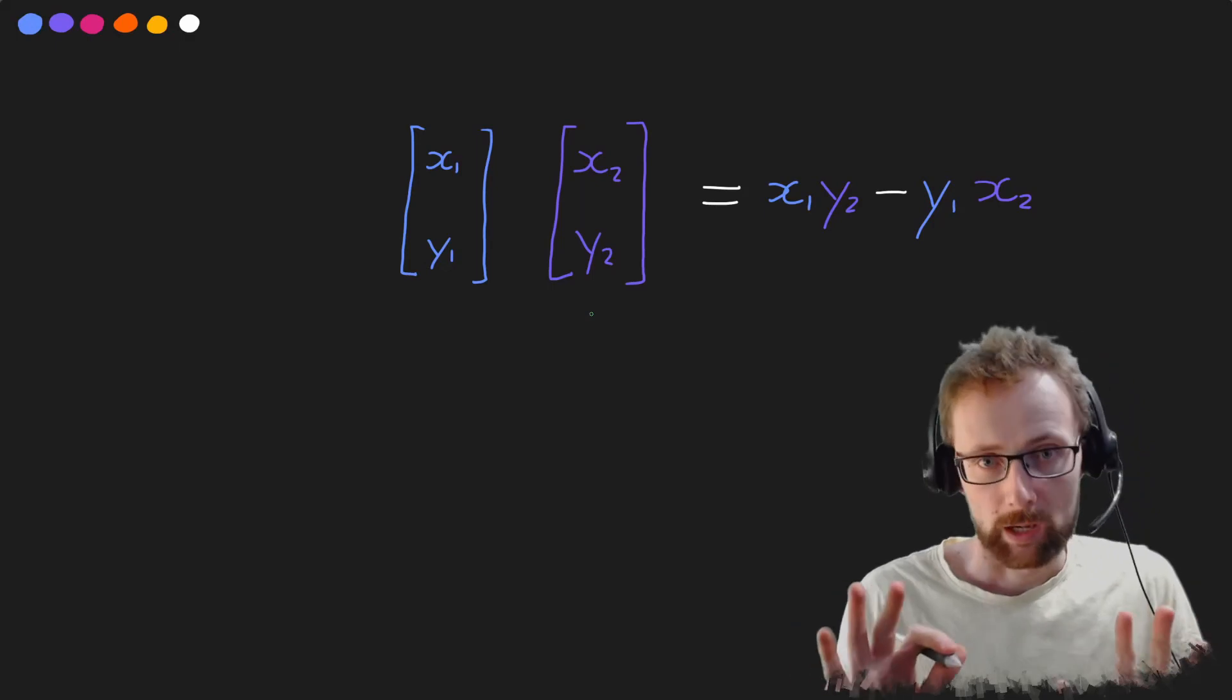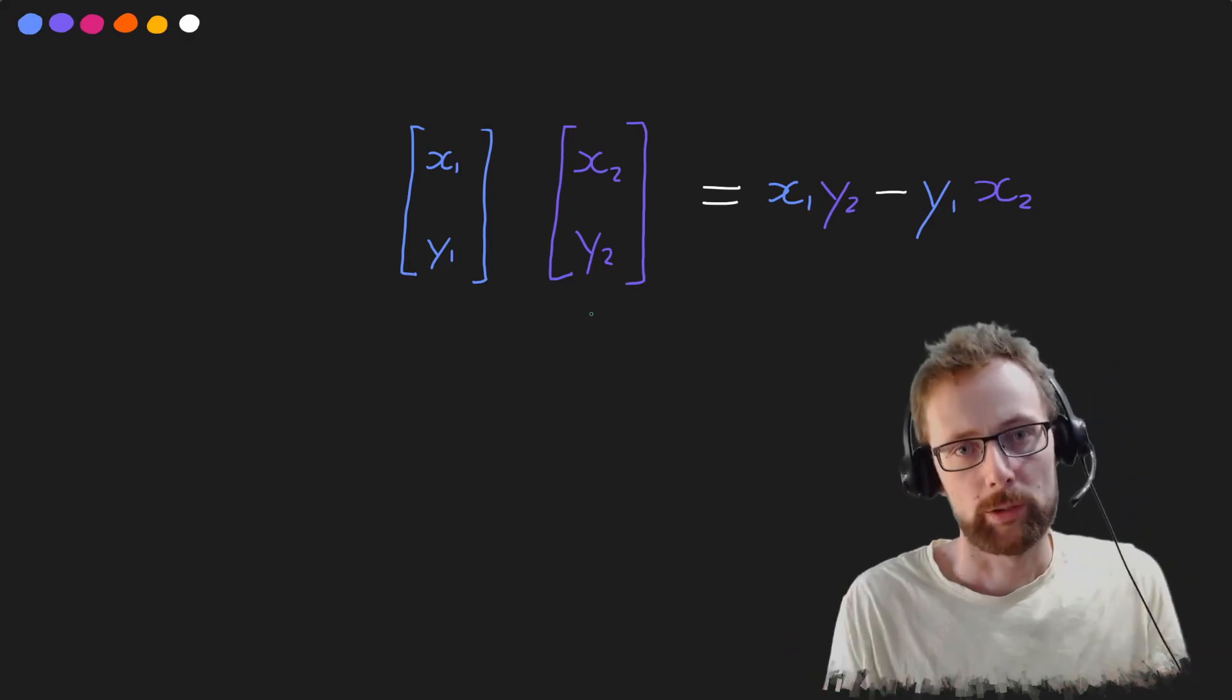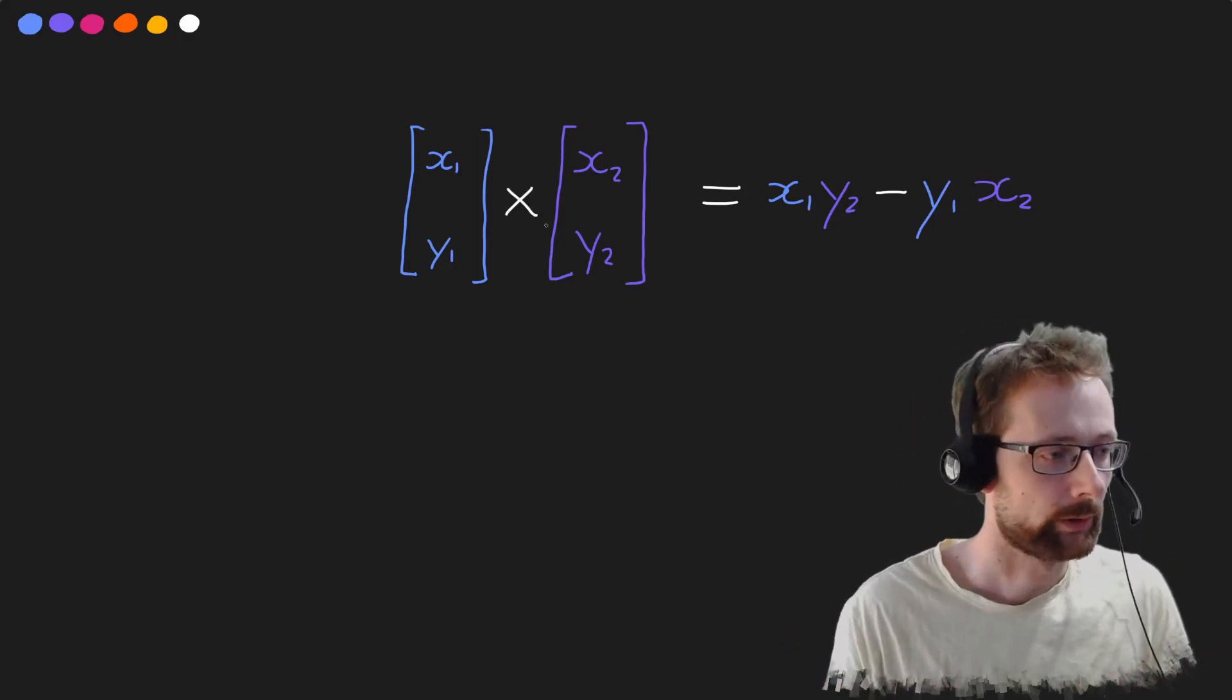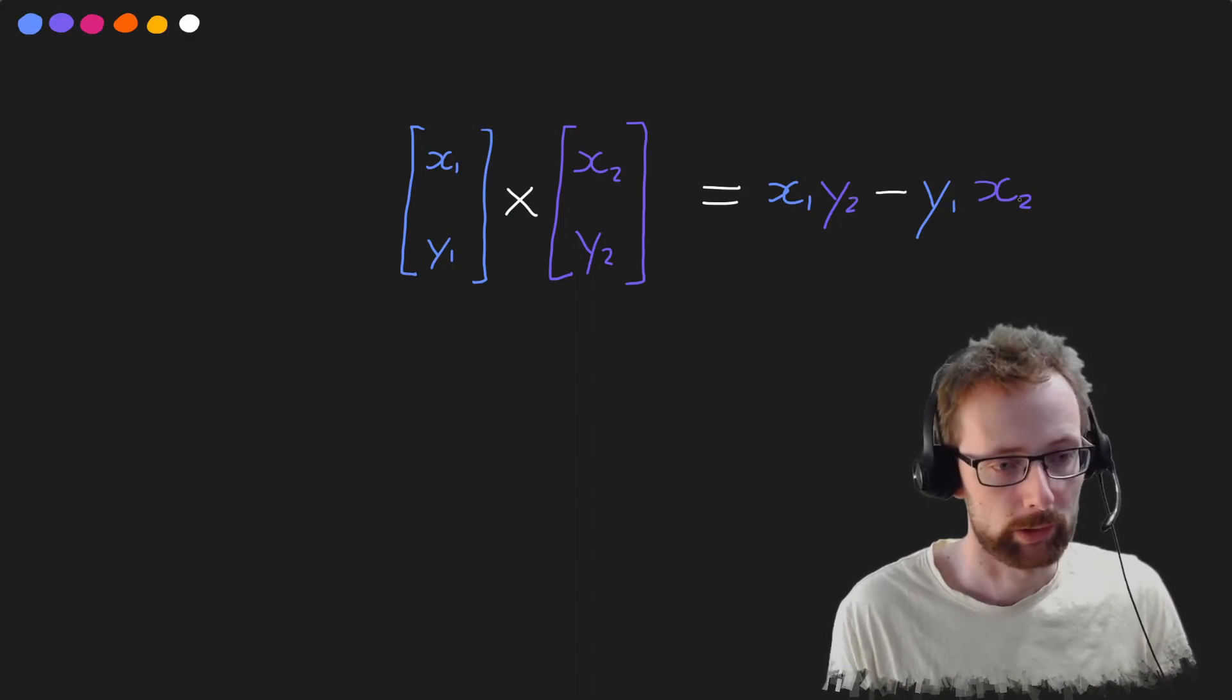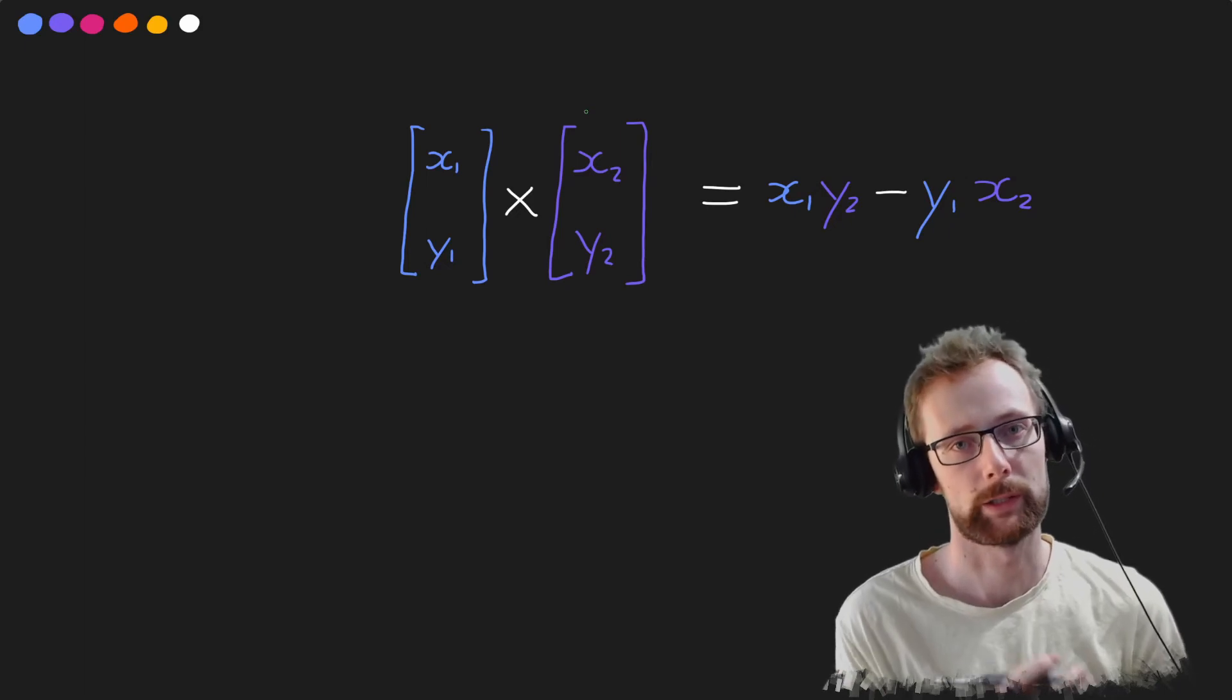So just an aside that the cross product in two dimensions we will define it to be x1 times y2 minus y1 times x2 for two column vectors like that.